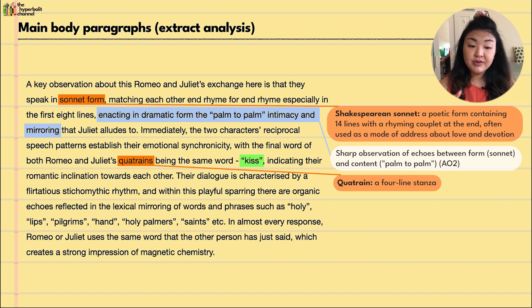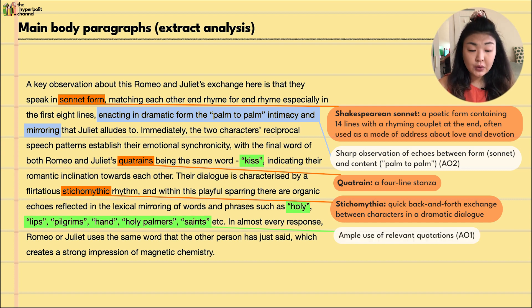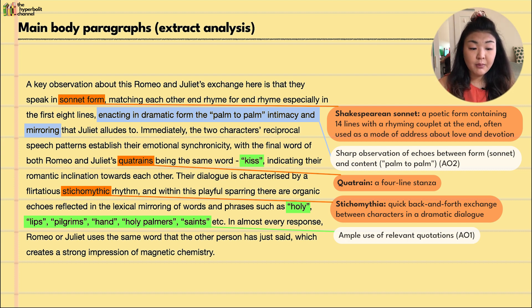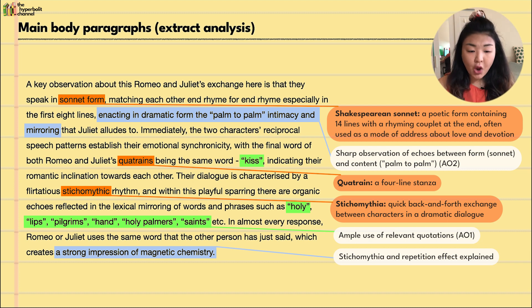The dialogue is characterized by a flirtatious stichomythic rhythm, and within this playful sparring there are organic echoes reflected in the lexical mirroring of words and phrases such as 'holy lips,' 'pilgrims,' 'hand,' 'holy palm,' and 'saints.' There's lots of repetition and echoing back and forth between the lovers. Stichomythia refers to the quick-paced back-and-forth rhythm between characters' dialogue, and here it reinforces the flirtatious dynamic. In almost every response, Romeo or Juliet uses the same word the other just said, creating a strong impression of magnetic chemistry.